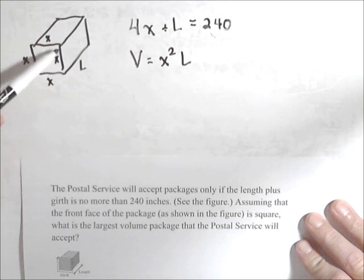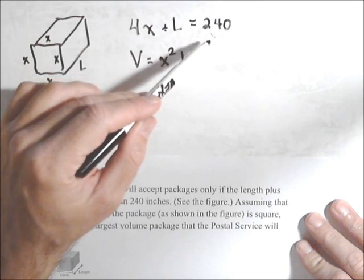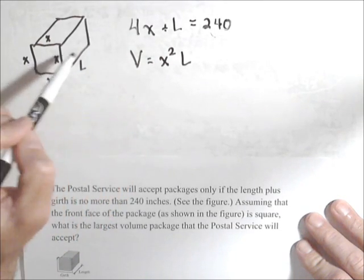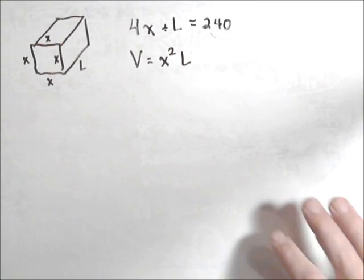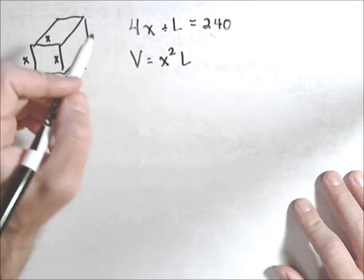So based on our drawing, we're going to make this square. So x plus x plus x plus x, so 4x plus L is going to be 240. And the volume of this package will be x squared times L. So we're going to maximize this subject to this constraint.